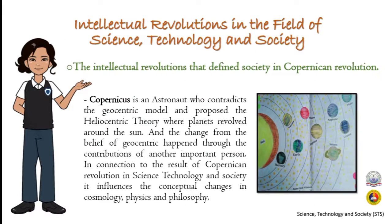We will now proceed to the intellectual revolutions in the field of science, technology, and society. There are four revolutions to tackle: the Copernican, the Darwinian, the Freudian, and the Information Revolution. These four revolutions highlight how they started and how society changed as a result.